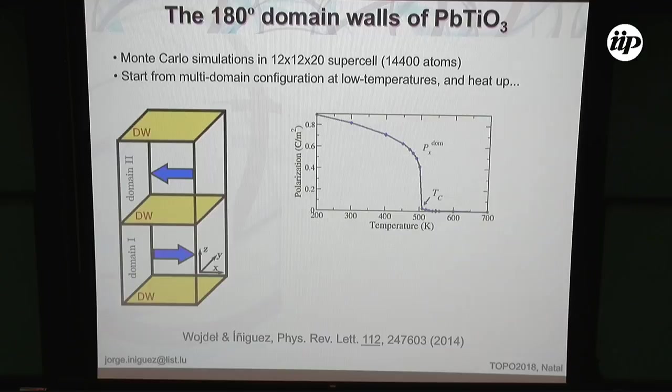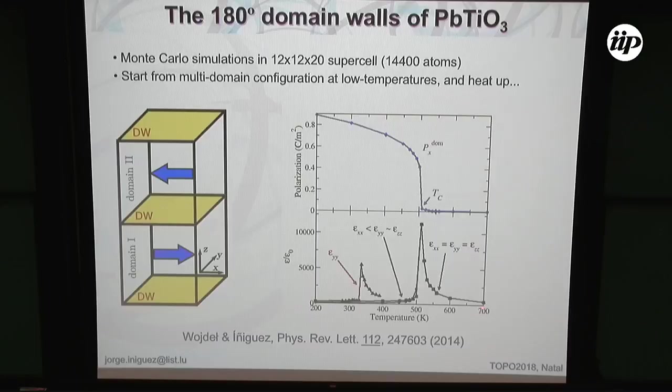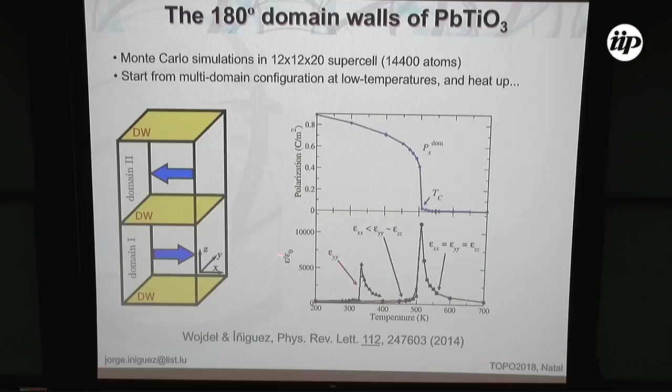But we also computed the electric susceptibility. When you compute the permittivity, you see at the transition temperature a very nice quasi-divergence, which compares reasonably with experiment. Below the transition temperature there is a splitting between the components perpendicular to the polarization. And unexpectedly, at some lower temperature for the macroscopic permittivity tensor, there is another anomaly.